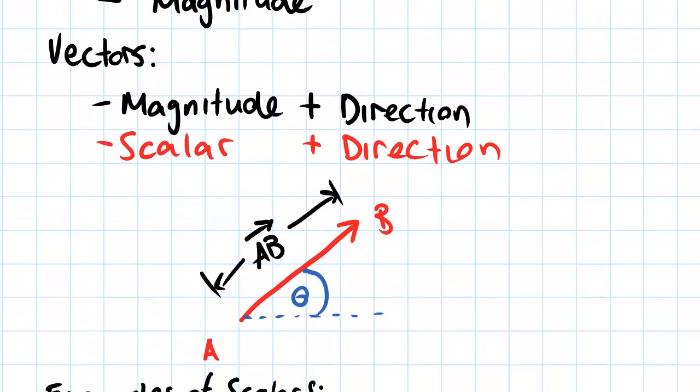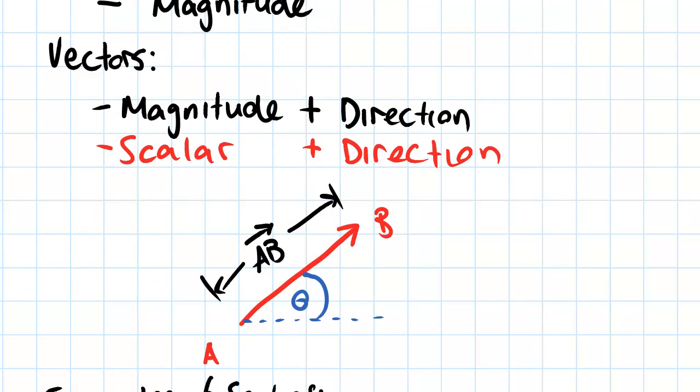So if we just look at this diagram here, you can see that we have a vector here, vector AB, and it's acting at an angle theta to this x-axis. And if we were to work out the scalar of this, all we're going to do is work out the magnitude. So we'll just take basically the absolute value of the total length of this vector, which is going to be the scalar magnitude.